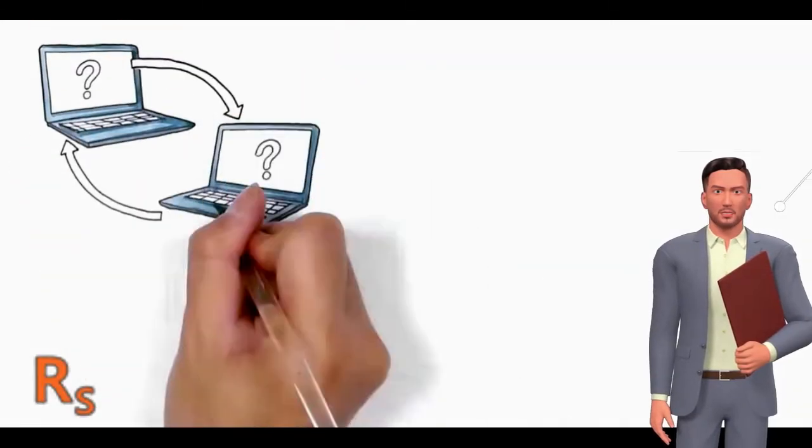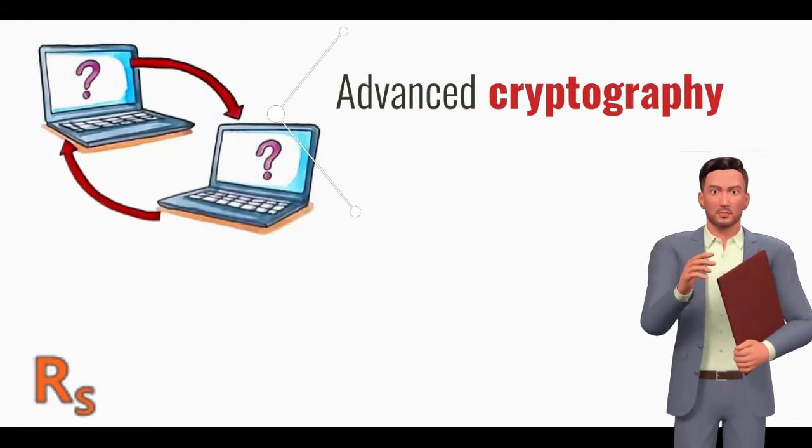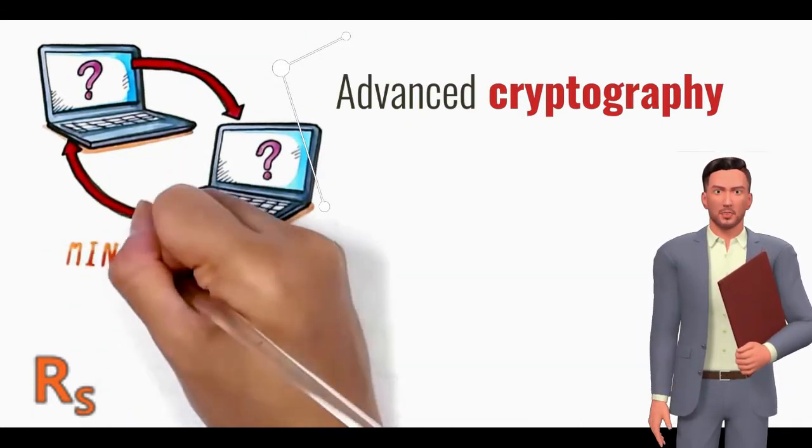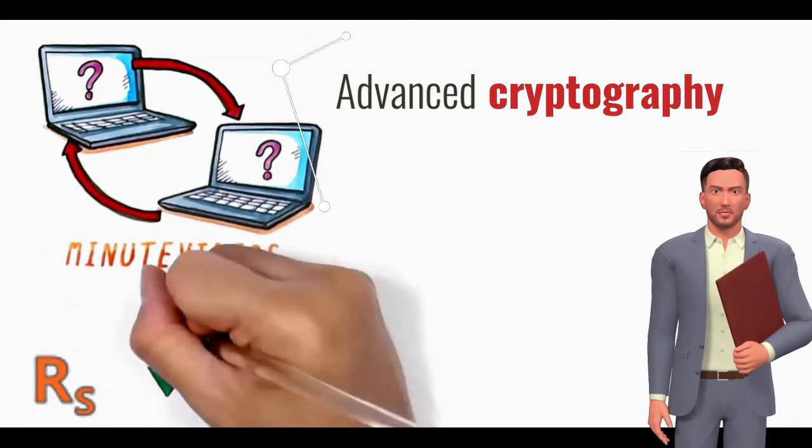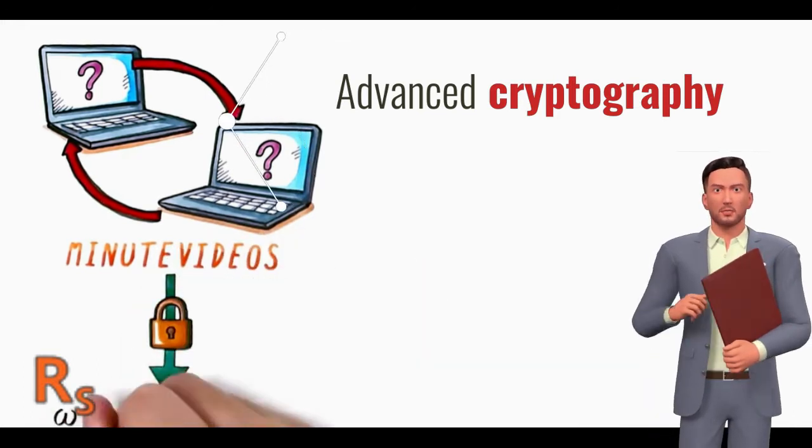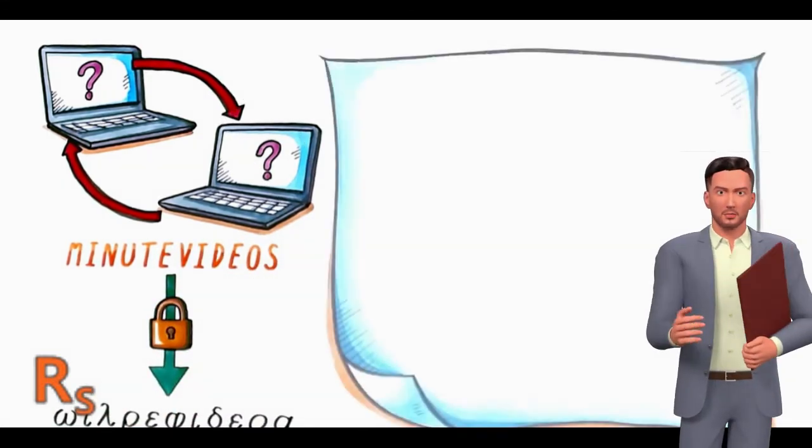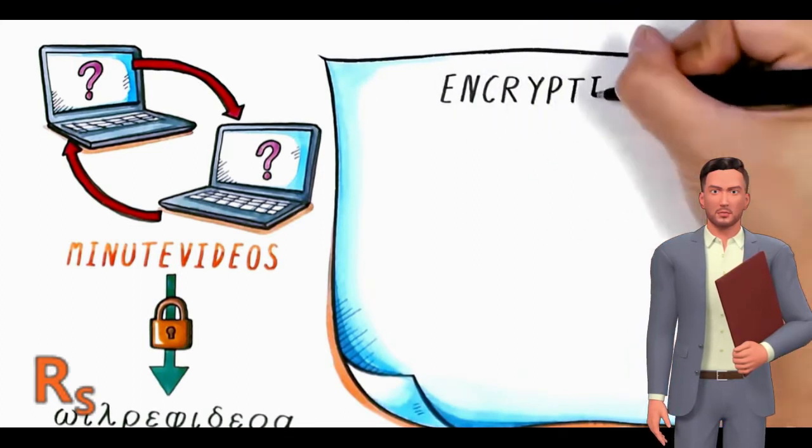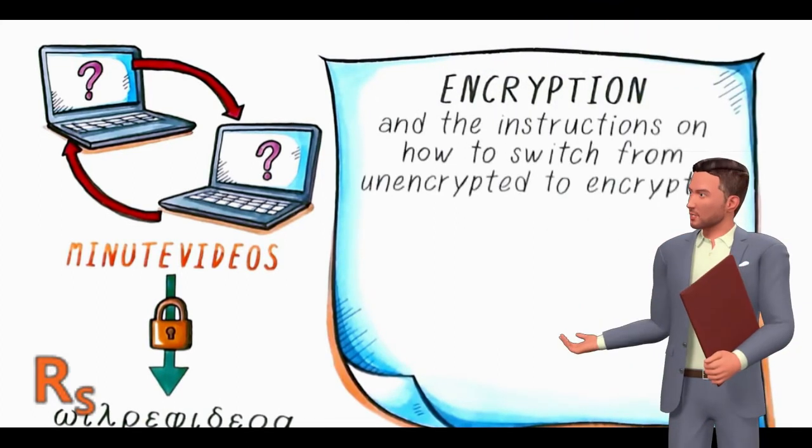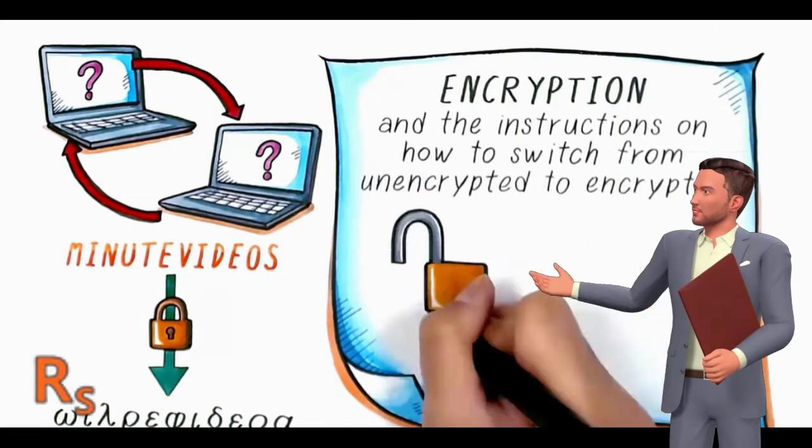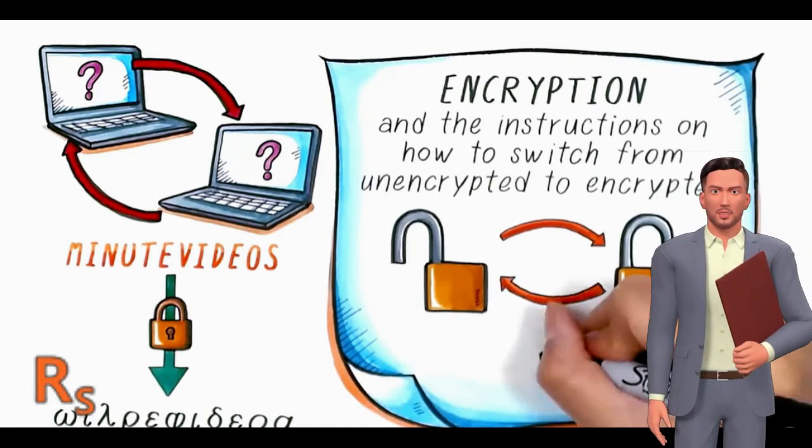Cryptography is associated with the process of converting ordinary plain text into unintelligible text and vice versa. It is a method of storing and transmitting data in a particular form so that only those for whom it is intended can read and process it. Cryptography not only protects data from theft or alteration but can also be used for user authentication.